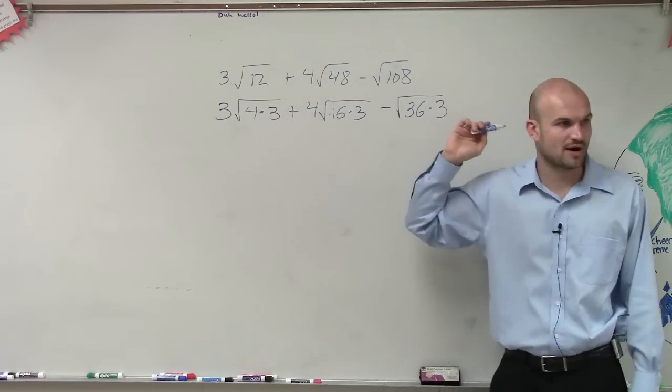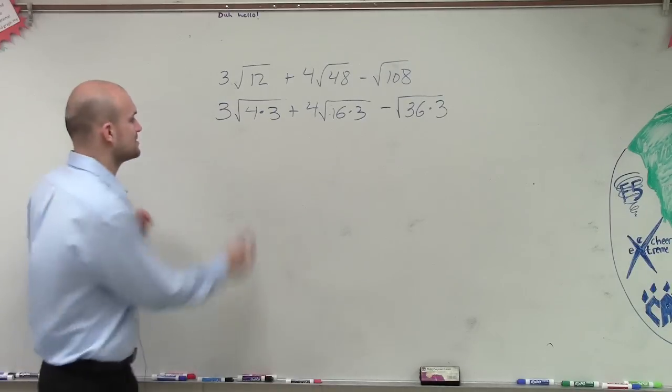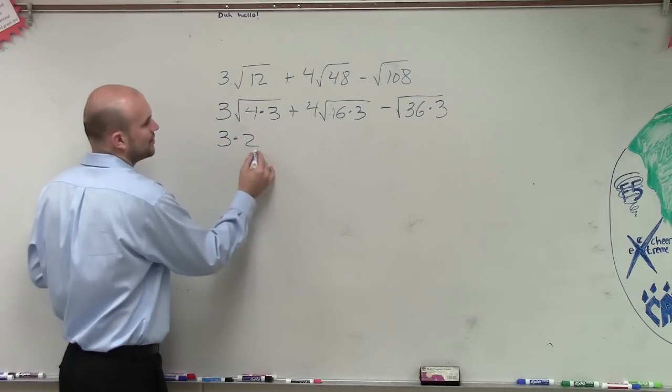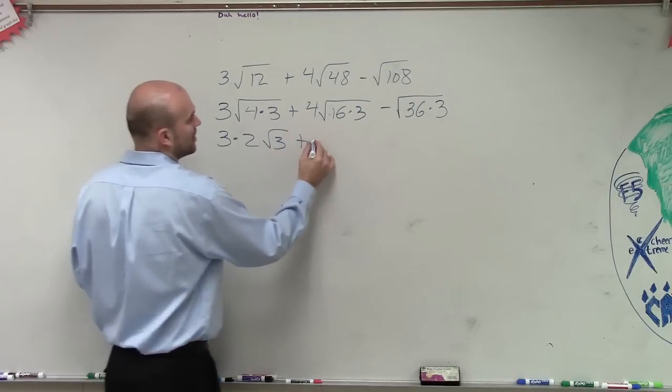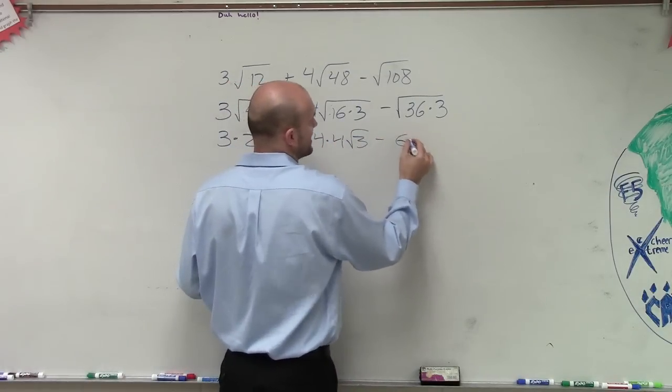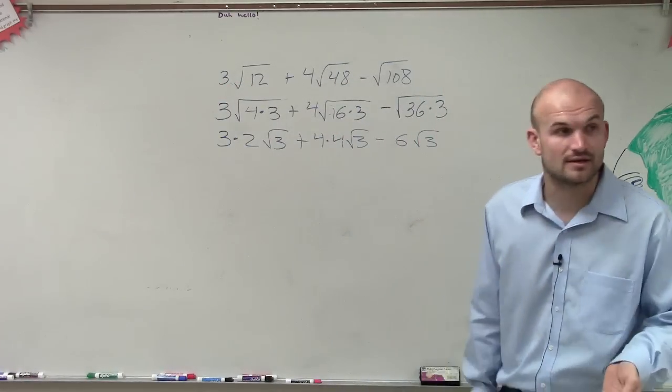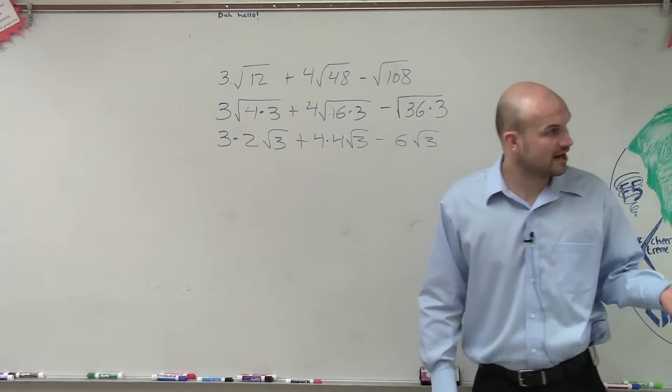And what I do is I just rewrote them as the product. So now what I do is I take the square root of the square numbers. So it's 3 times 2, square root of 3, plus 4 times 4, square root of 3, minus 6 times square root of 3. So you guys see how, when you have a square number, you can take the square root of it. And that's very, very helpful.